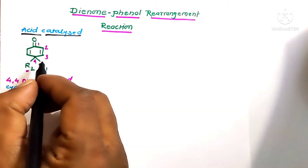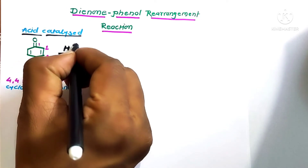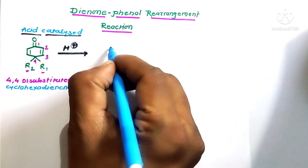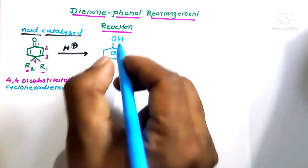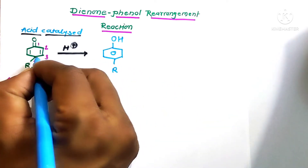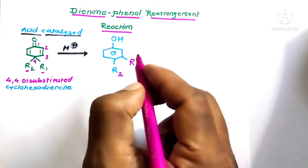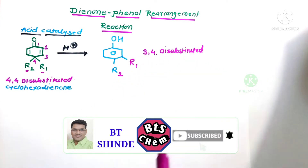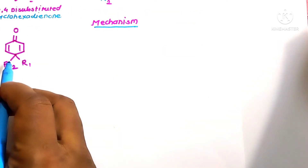This substrate contains a ketone group and is reacted in the presence of an acid catalyst. The H⁺ proton acts as the acid catalyst to form the final product. In this product, a 1,2-shift takes place — one group shifts from carbon 4 toward carbon 3 — forming 3,4-disubstituted phenol as the final product.